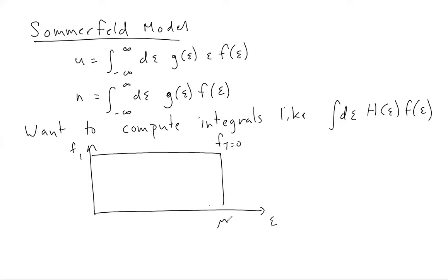When T increases from zero, this sharp step smooths out a little bit and it looks something like this. So this is for temperatures significantly less than the chemical potential divided by kB but still larger than zero. The idea is to see that F differs from its T equals zero form only in a small region around mu, around E equals mu. The characteristic width of this region is of order kBT.